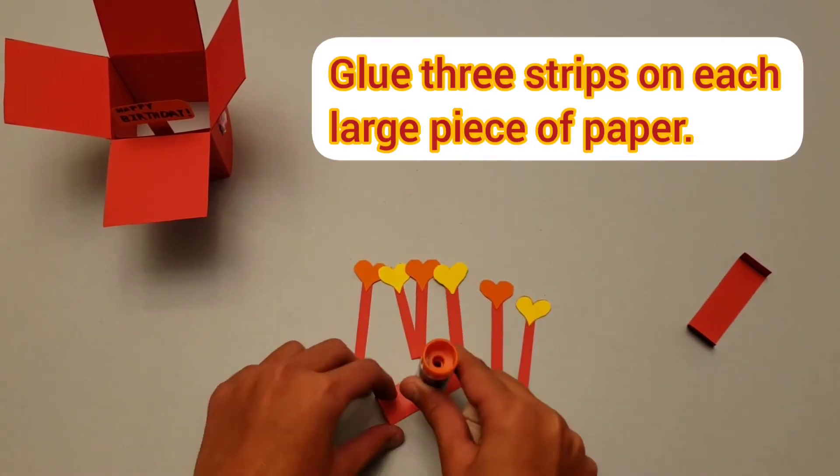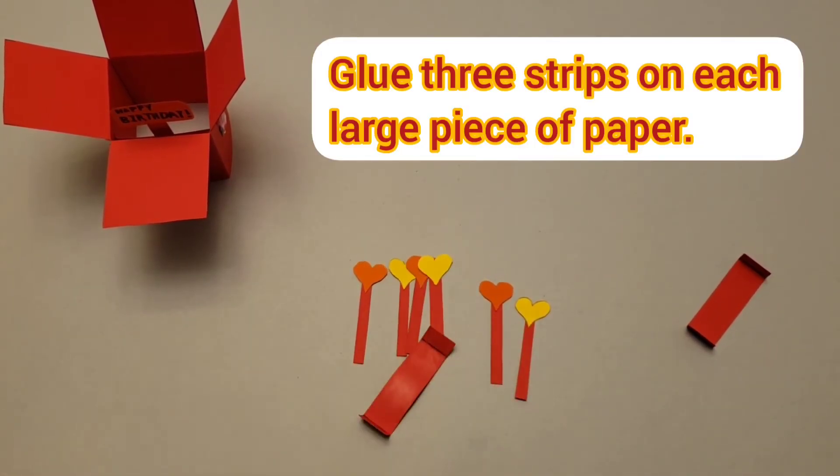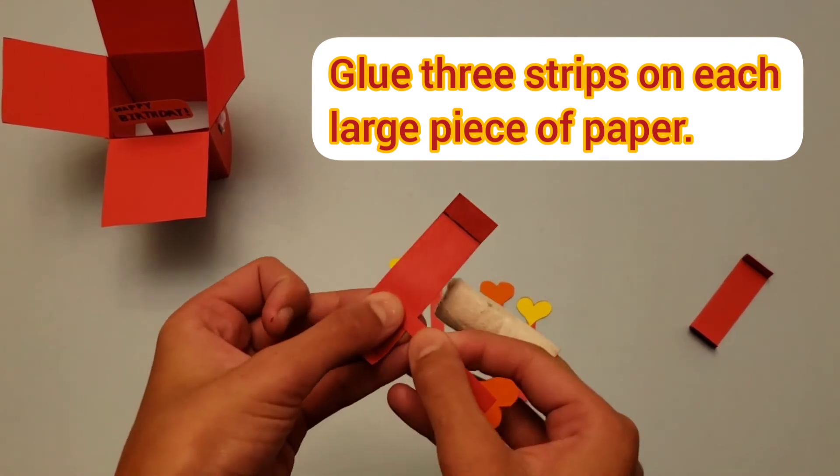Now you're going to put some glue on the big piece of paper, and attach three of these heart sticks on each.